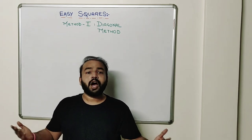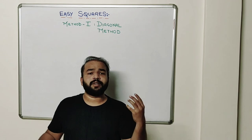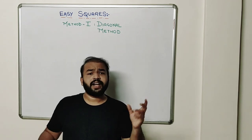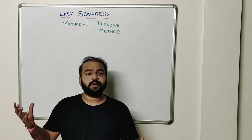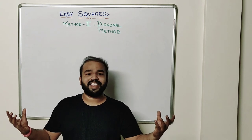So today I will show you how the squares of certain numbers are done. Square is nothing but when the number is multiplied by itself.